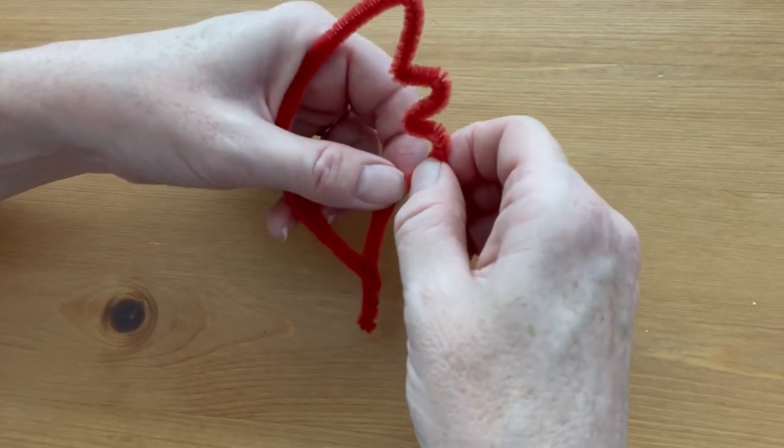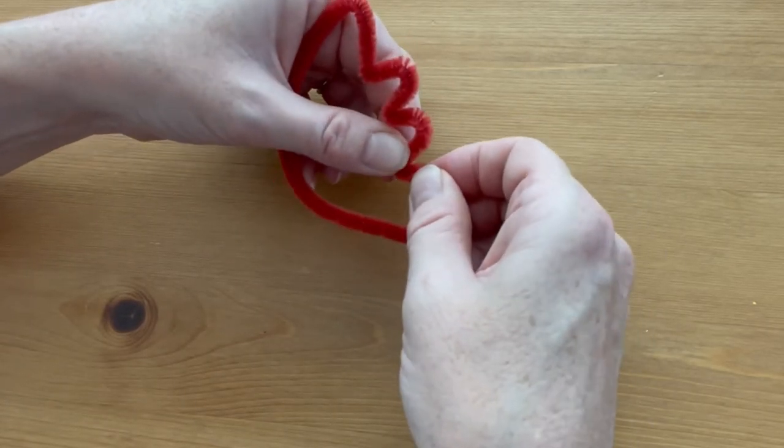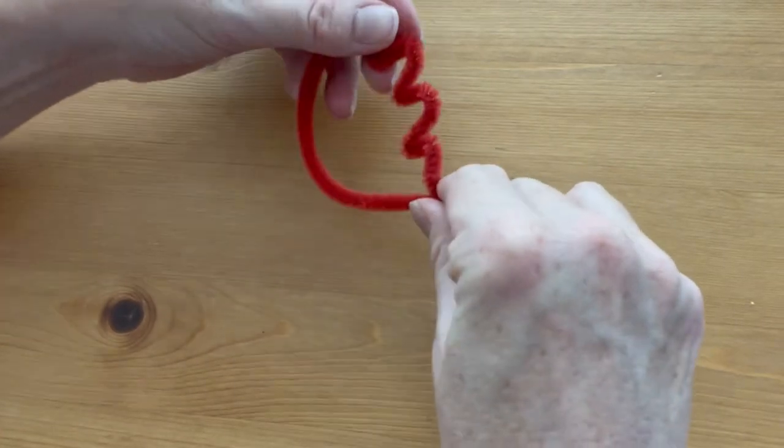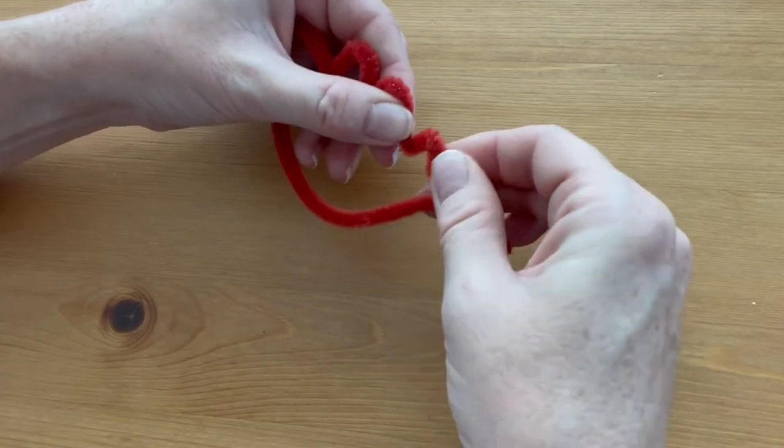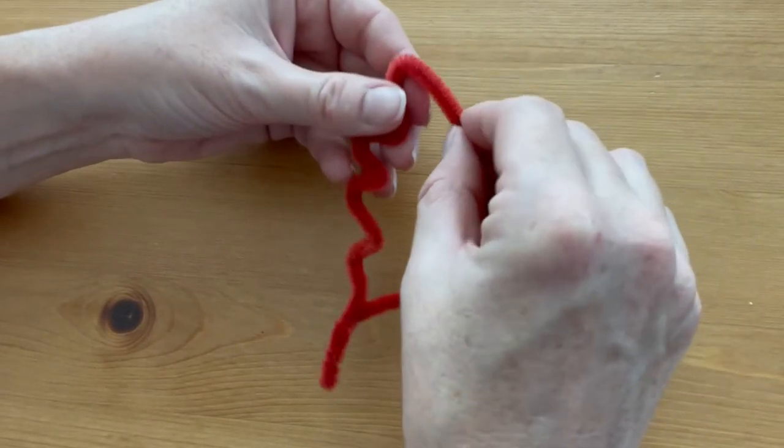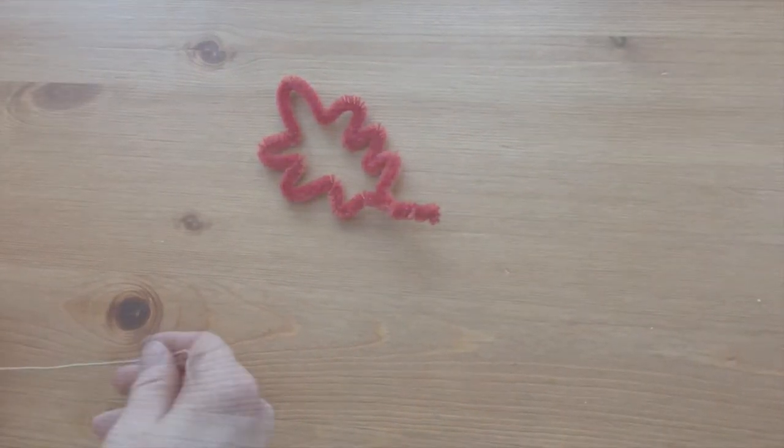They tend to want to get pointy—you want to keep those rounded if you can. So there's one side of our leaf, and then turn it over and do the other.